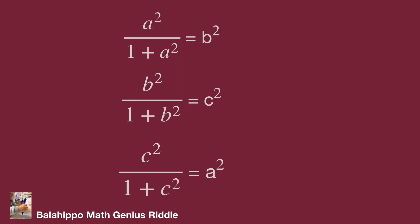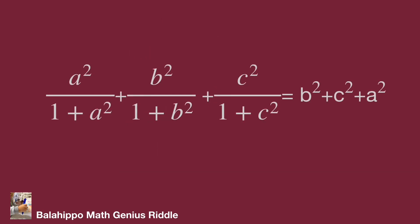How can we connect these equations? If we put a² over (1 + a²) and a² together, we may generate a new result. Therefore, I add up all three equations: a² over (1 + a²) plus b² over (1 + b²) plus c² over (1 + c²) on the left side, equal to b² plus c² plus a² on the right side.